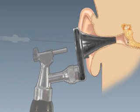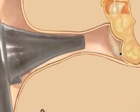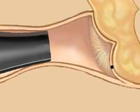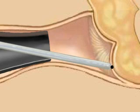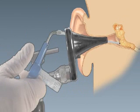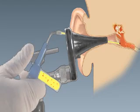Use a second tympanocentesis aspirator with a flexible catheter to suction any remaining pus from the middle ear. Insert the catheter through the speculum and place it over the opening in the tympanic membrane made by the needle. The catheter should not go through the tympanic membrane. This step also clears the debris in the external auditory canal and may enhance visualization of the tympanic membrane at future visits.